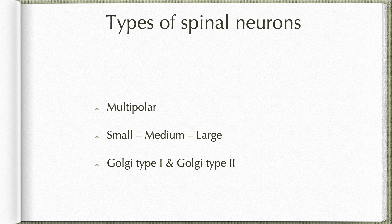The largest neurons are the alpha motor neurons. Scattered amongst them are slightly smaller gamma motor neurons. Both these are found in the ventral horn and they supply extrafusal and intrafusal fibers in the skeletal muscle. On the medial aspect of the ventral horn, we also find Renshaw cells, which are basically interneurons that exert tonic inhibition of alpha motor cells.